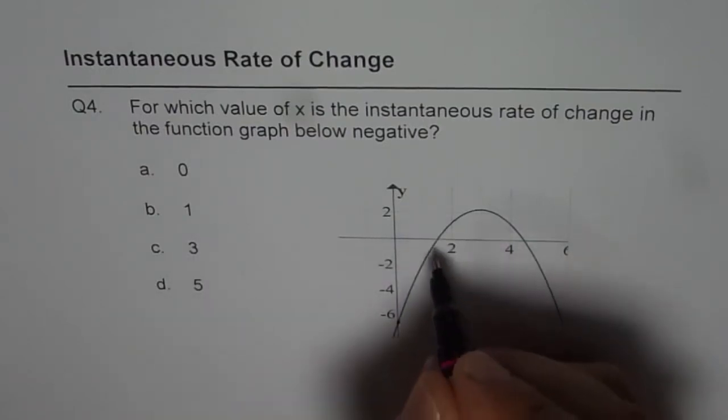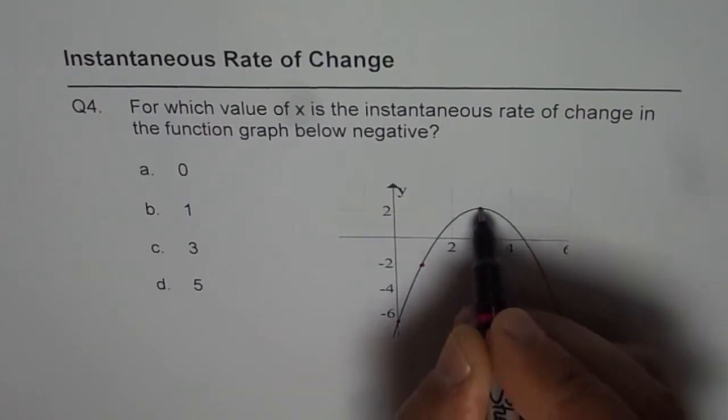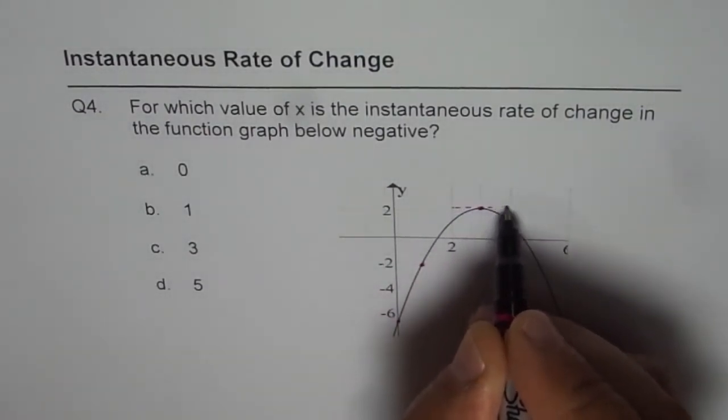At 1 we are looking at a point which is kind of here, here also the tangent is positive. At 3 we are looking at this point, here the tangent line is horizontal.